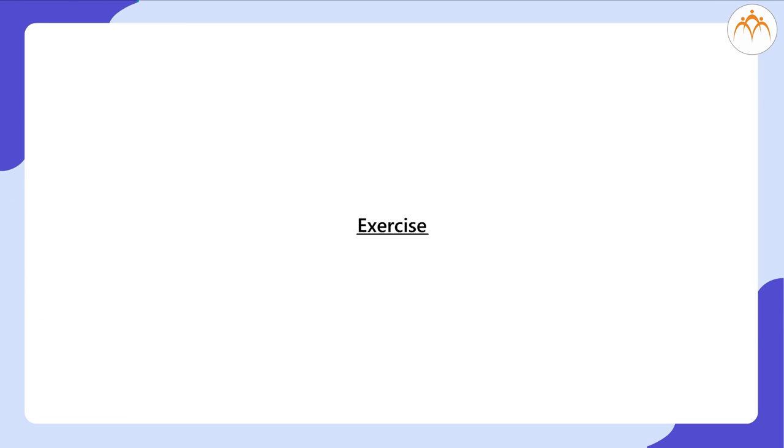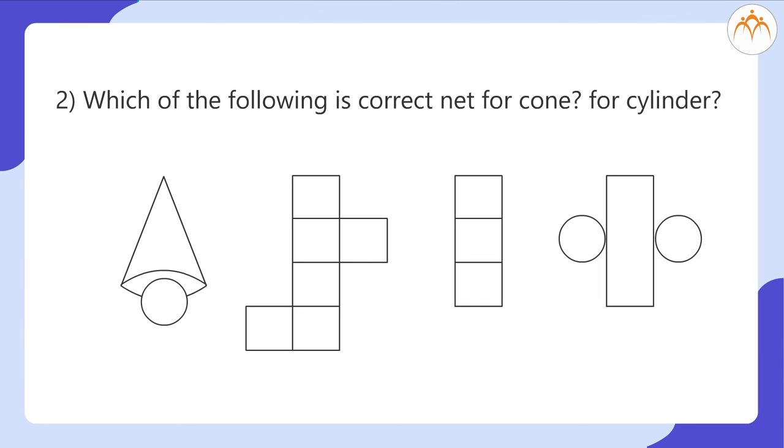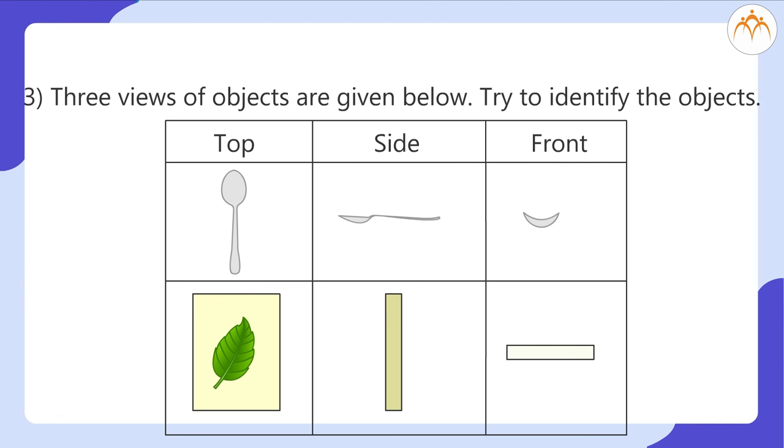Exercise. Draw the following nets on card sheet and try to make a pyramid. Which of the following is the correct net for cone, for cylinder? Three views of objects are given below. Try to identify the objects.